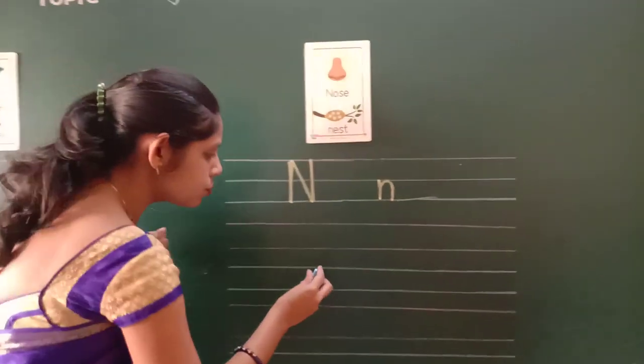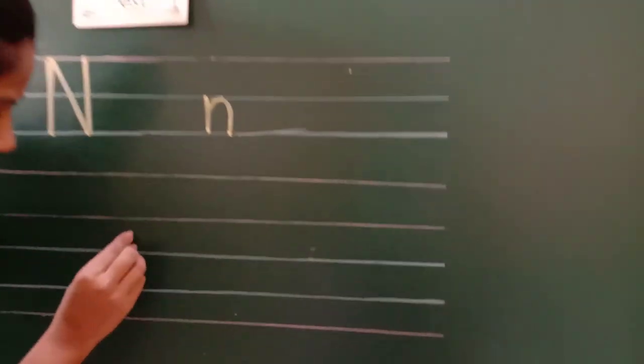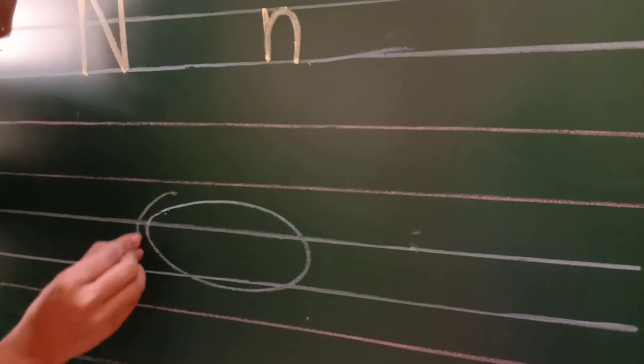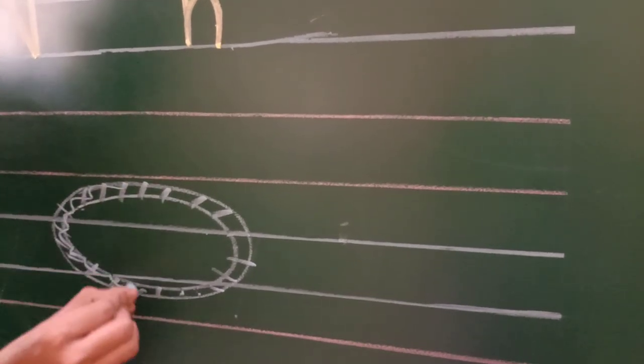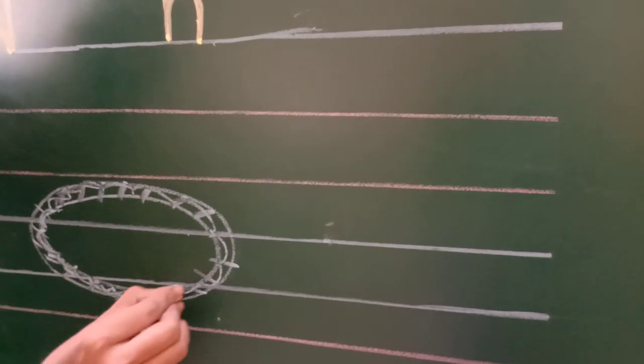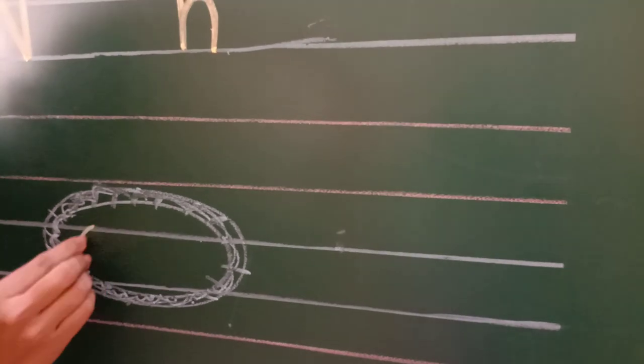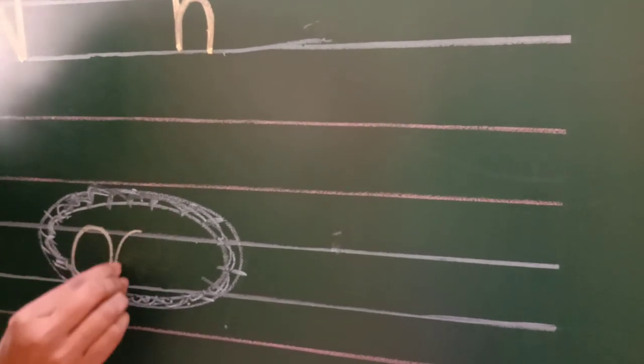Next line, we are going to draw the picture of nest. First, draw two oval shapes. You know, the birds build the nest, and in the nest they lay eggs.